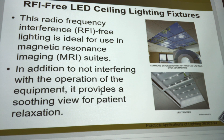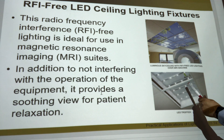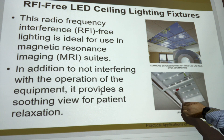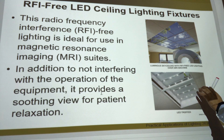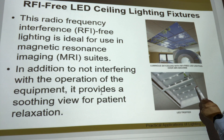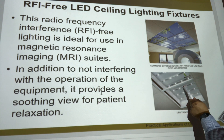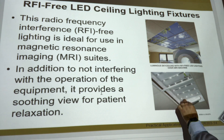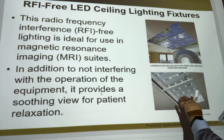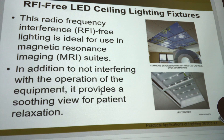RFI-free LED ceiling light fixtures — these will have a lens over them so you just get a smooth look. It's a troffer — the small LEDs are very bright, but the troffer will diffuse the light so that you get a nice even appearance.